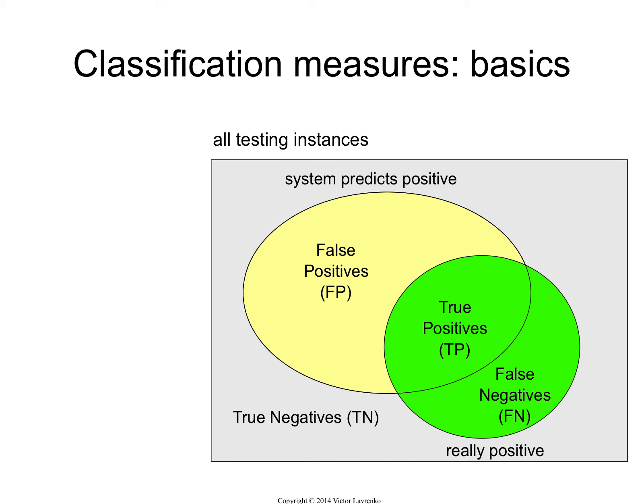You start looking at the intersections of these sets. The intersection of what my system predicts as positive and what is really positive — that's known as true positive. My system says it's positive and it's correct, it's true.